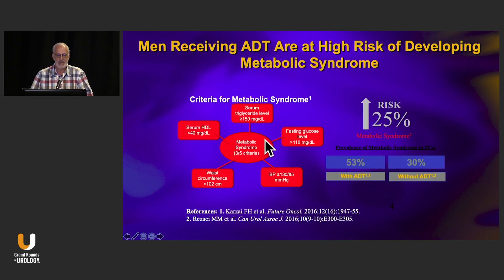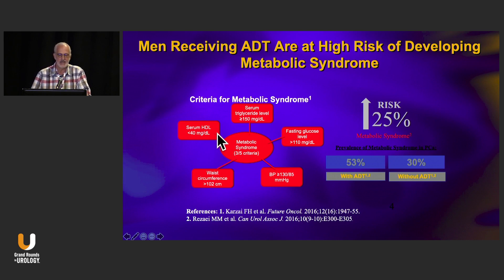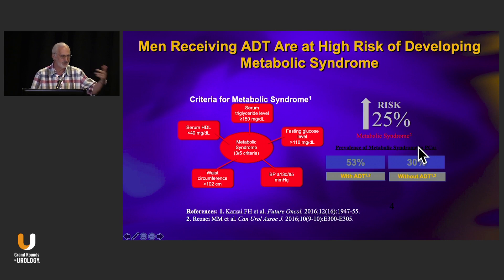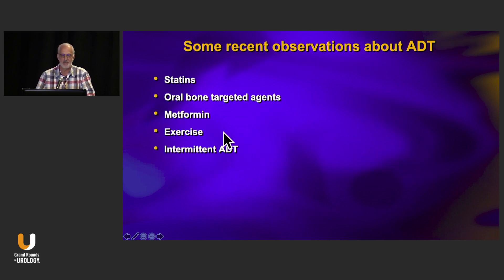As a take-home message: these unwanted effects can in many cases be minimized by appropriate interventions, and it's our responsibility. The metabolic syndrome — most people are aware of the five criteria: hypertriglyceridemia, hyperglycemia, hypertension, obesity, and increased HDL — and three of these five constitutes the metabolic syndrome. It's estimated that in men on ADT, that risk increases by more than 50%, partly because metabolic syndrome and prostate cancer co-segregate with similar predisposing factors like diet and obesity.